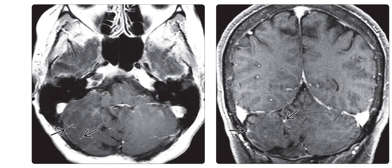The coronal T1 contrast-enhanced fat-suppressed MRI shows the enhancing vessels but no enhancement of the mass itself. The pre-operative diagnosis was cerebellar neoplasm. This is a biopsy-proven case of dysplastic cerebellar gangliocytoma. Further evaluation revealed Cowden disease, and the need for active cancer surveillance was identified.